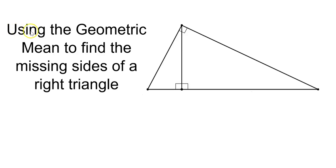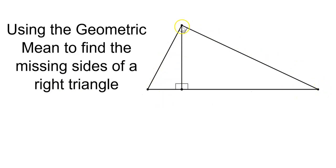In this video, we will be using the geometric mean to find the missing sides of a right triangle. This is a great, wonderful shortcut that we can use when we have these large right triangles divided with an altitude.